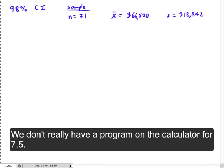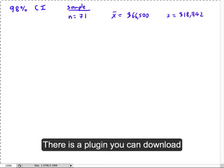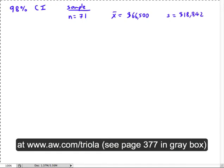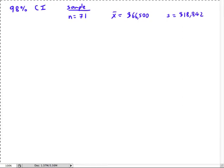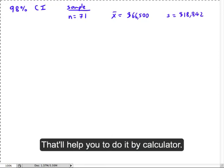The tough thing is that section 7.5, we don't really have a program built into your TI calculators to do a confidence interval for variance or deviation. There is a plug-in you can download. They talk about it at the end of the section. You can go to www.aw.com for Addison-Wesley slash triola. There's a place you can download this thing called s-squared-int, and that'll help you be able to do it by calculator.